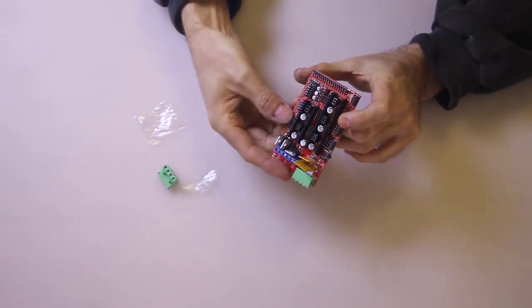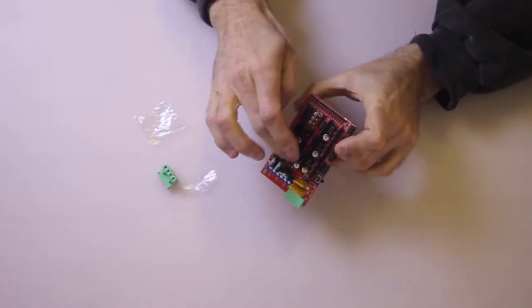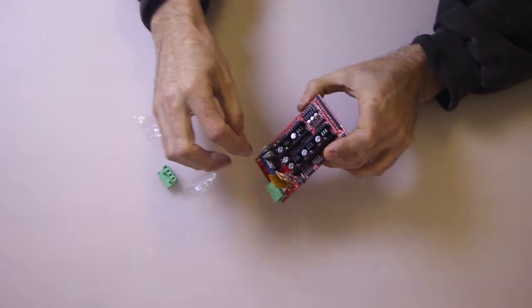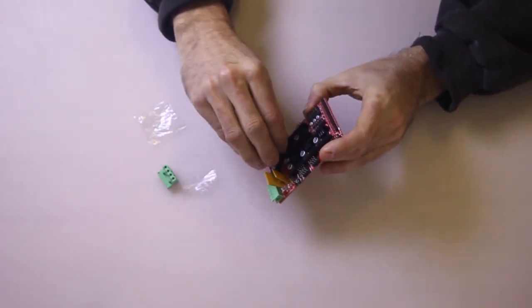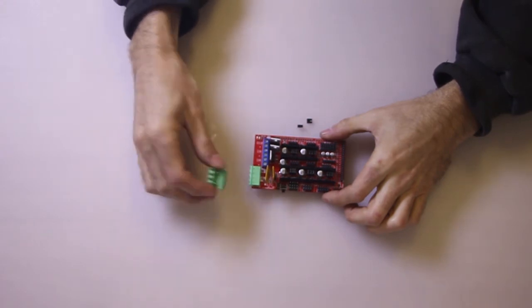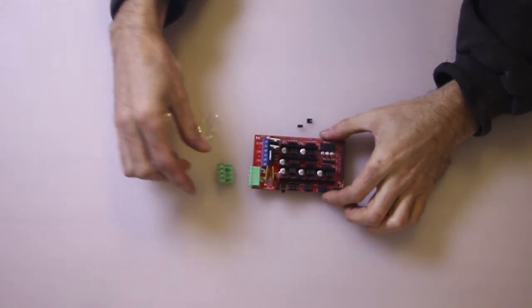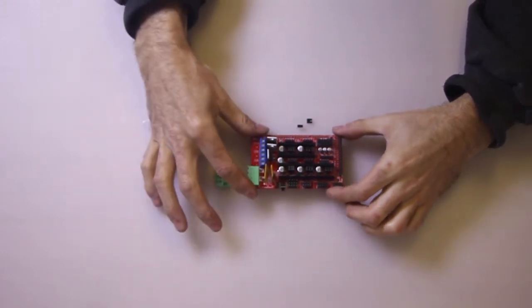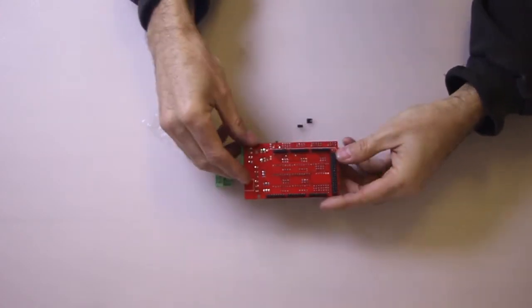And that's pretty much ready to go. So we just want to make sure these headers are nice and straight so we can plug the steppers in. And it also comes with a connector which will connect shortly onto the power supply. So that's ready to be plugged onto the printer.